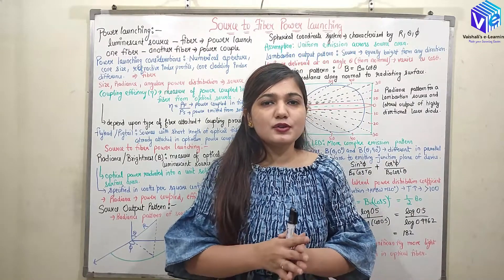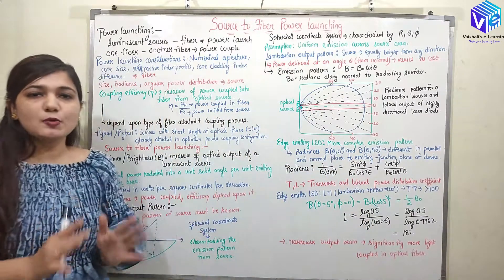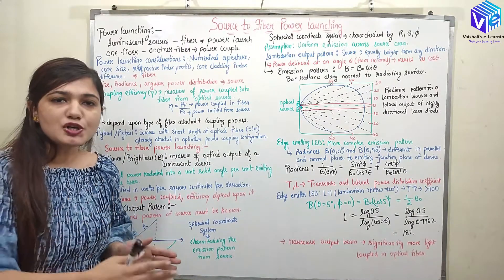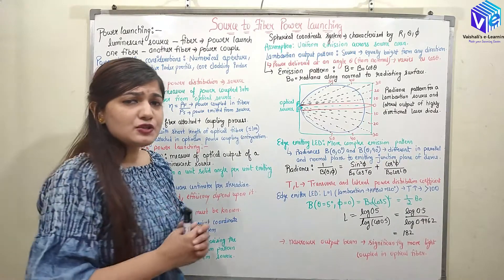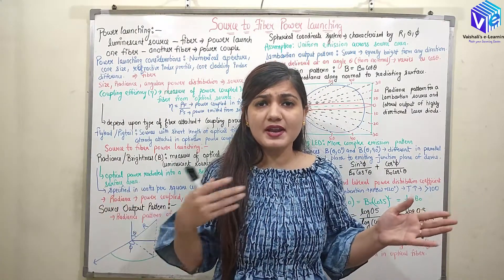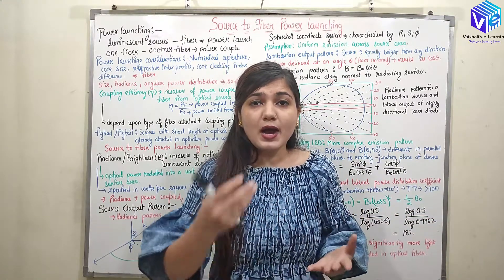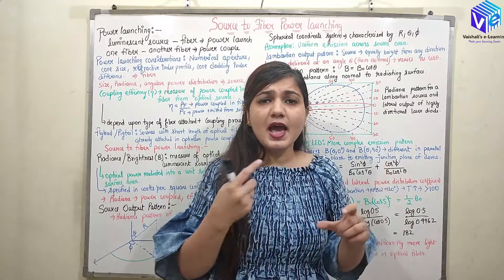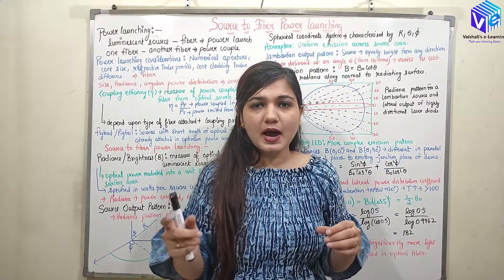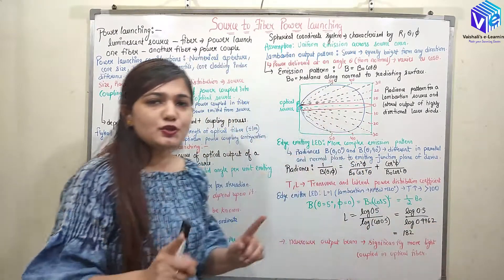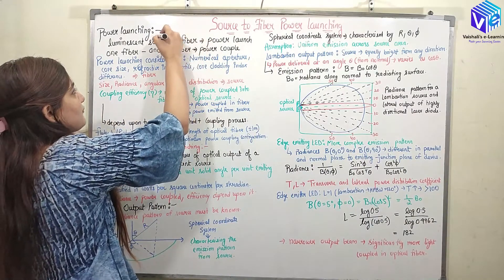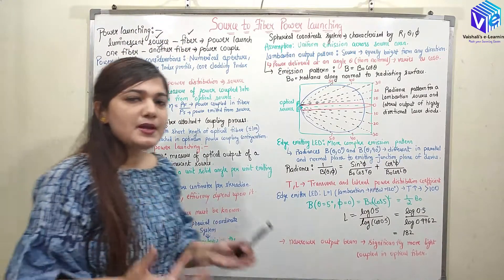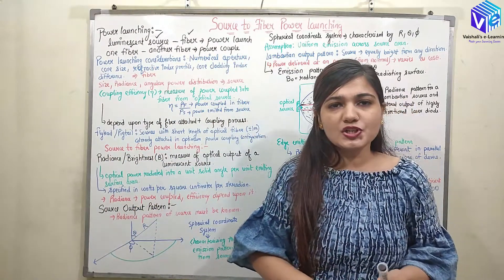Now the next task is to couple or launch the power from the source to the given fiber. So we have two basic tasks in power launching: first, launching the light from a luminescent source into the fiber; and second, coupling the power from one fiber to another fiber at a joint, where some losses occur.